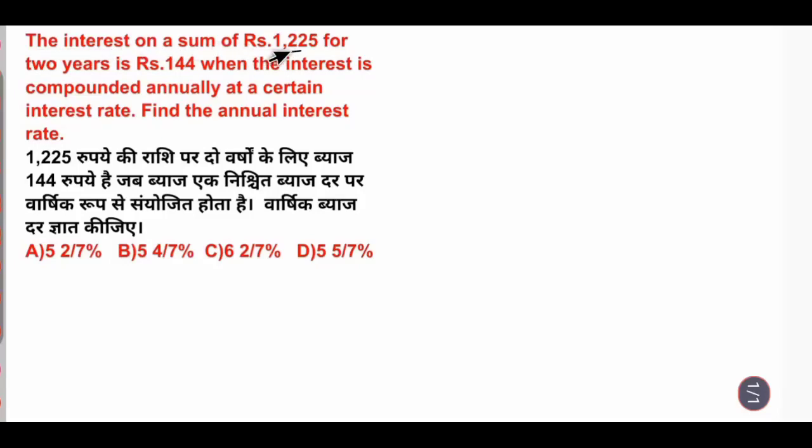The interest on a sum of rupees 1225 for two years is rupees 144, when the interest is compounded annually at a certain interest rate. Find the annual interest rate. Look, what is 144?